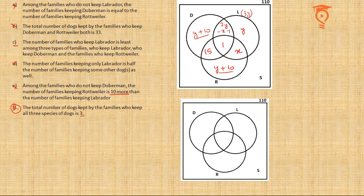Now working out the algebra: the entire Labrador circle gives 3y; Rottweiler contributes 2(y+10) = 2y+20; plus 15 from the Doberman-Rottweiler only region. Setting the total equal to 105: 5y + 35 = 105, so 5y = 70, giving y = 14.